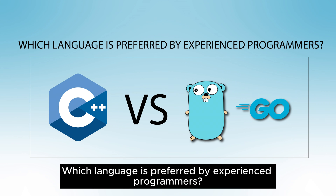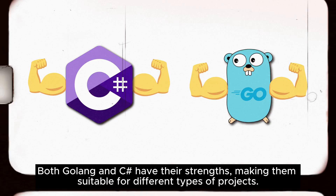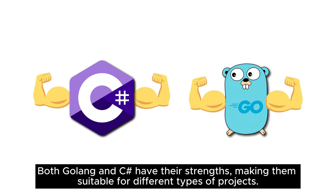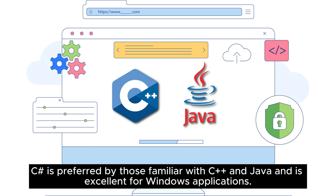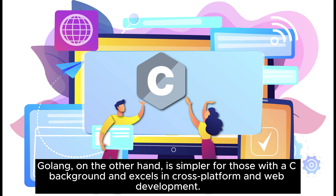Which language is preferred by experienced programmers? Both Golang and C-sharp have their strengths, making them suitable for different types of projects. C-sharp is preferred by those familiar with C++ and Java, and is excellent for Windows applications. Golang, on the other hand, is simpler for those with a C background, and excels in cross-platform and web development.